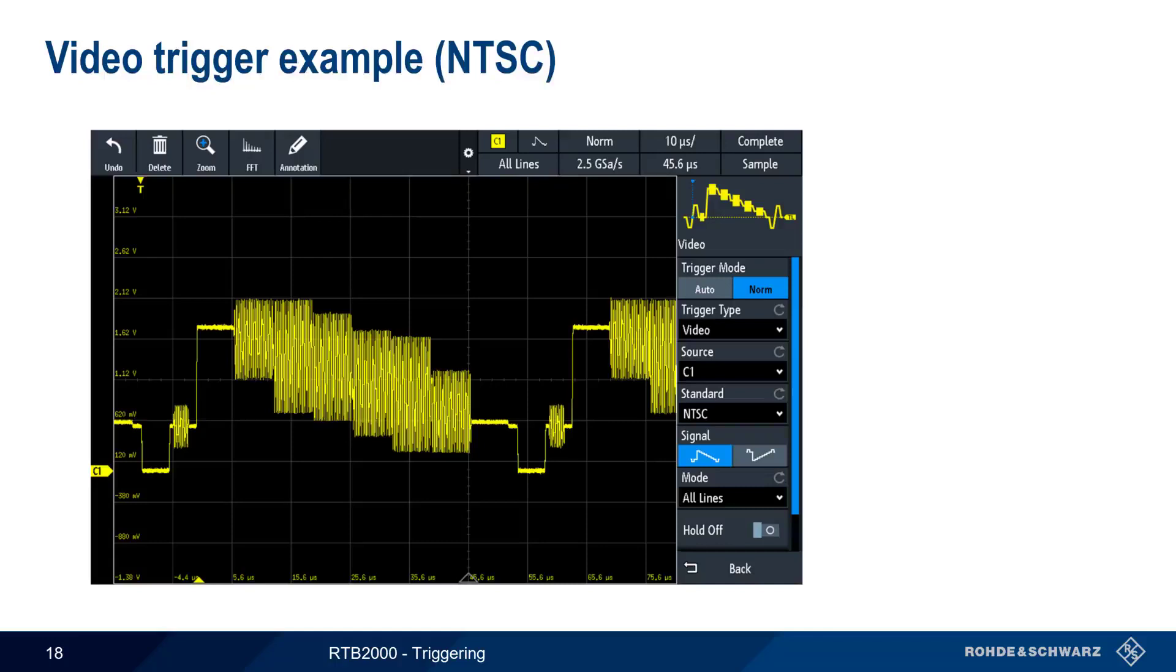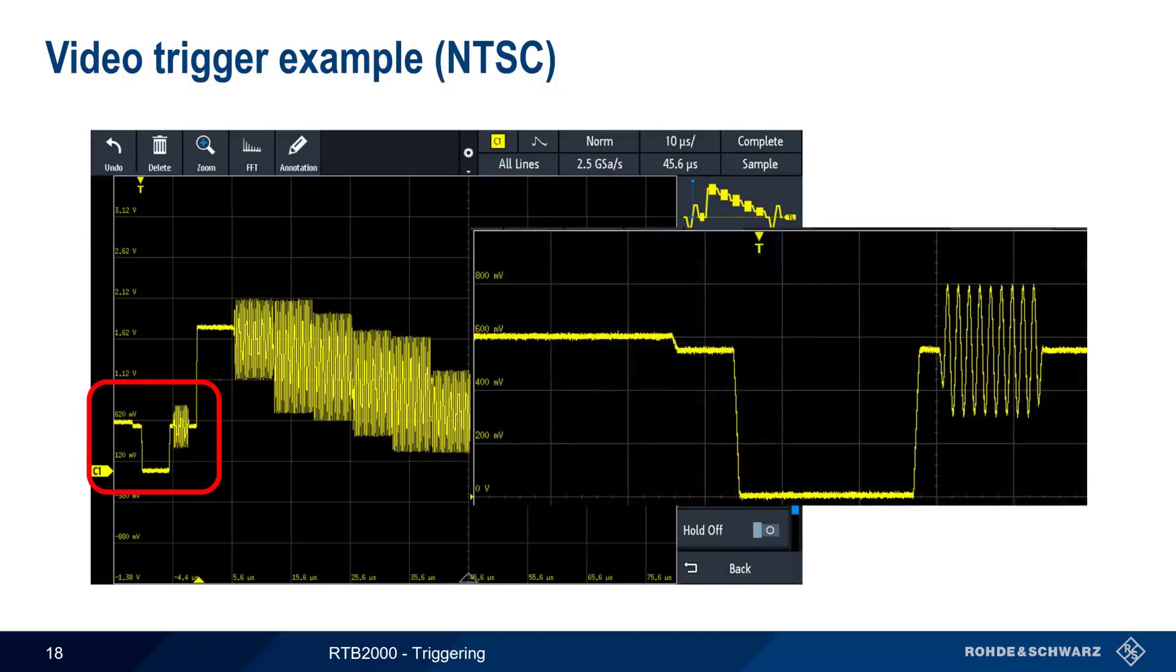Here, the RTB is triggering on an NTSC video signal. If we zoom in on the first part of the signal, we can clearly see and measure different parts of the signal, such as the so-called front porch, sync tip, and color burst.